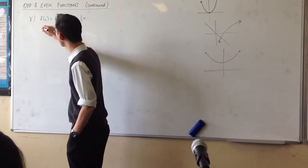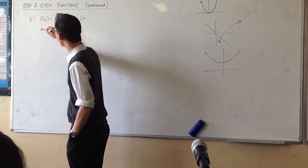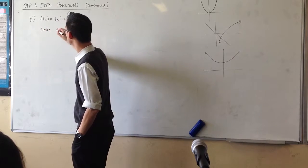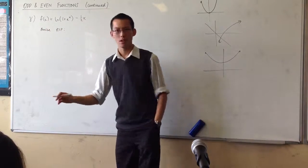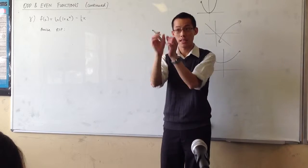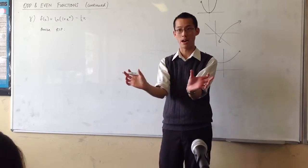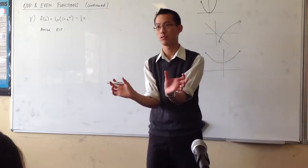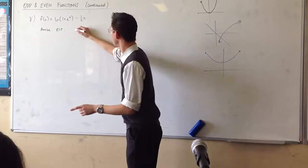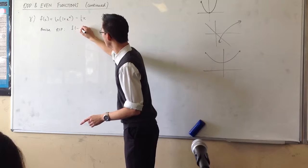So how do we prove it? Let's just revise. What are you required to prove to say something is an even function? What's the actual final line — your conclusion? f of minus x is equal to f of x.